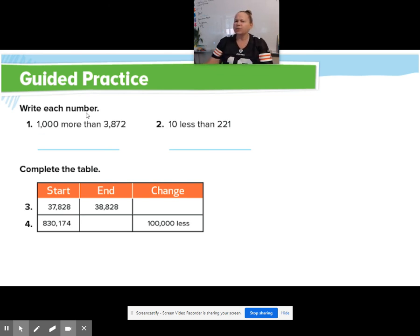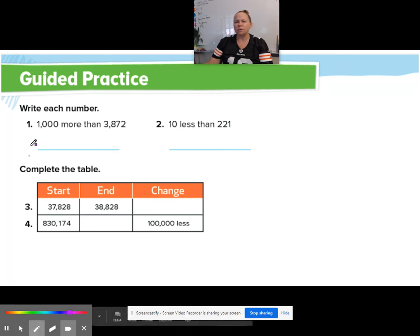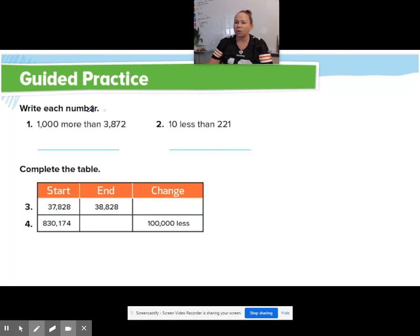All right. So write each number. I always read the directions first. Write each number. All right. 1,000 more. Remember, more is telling me I'm adding. Then 3,872. So 1,000 more. So that would be 4,872. Did you get that? Great.